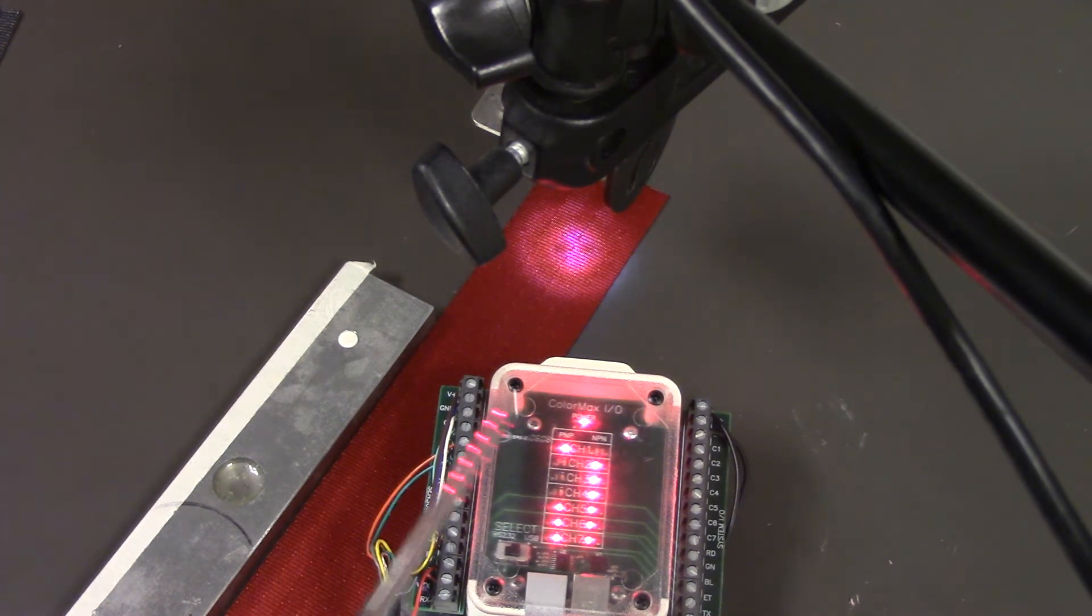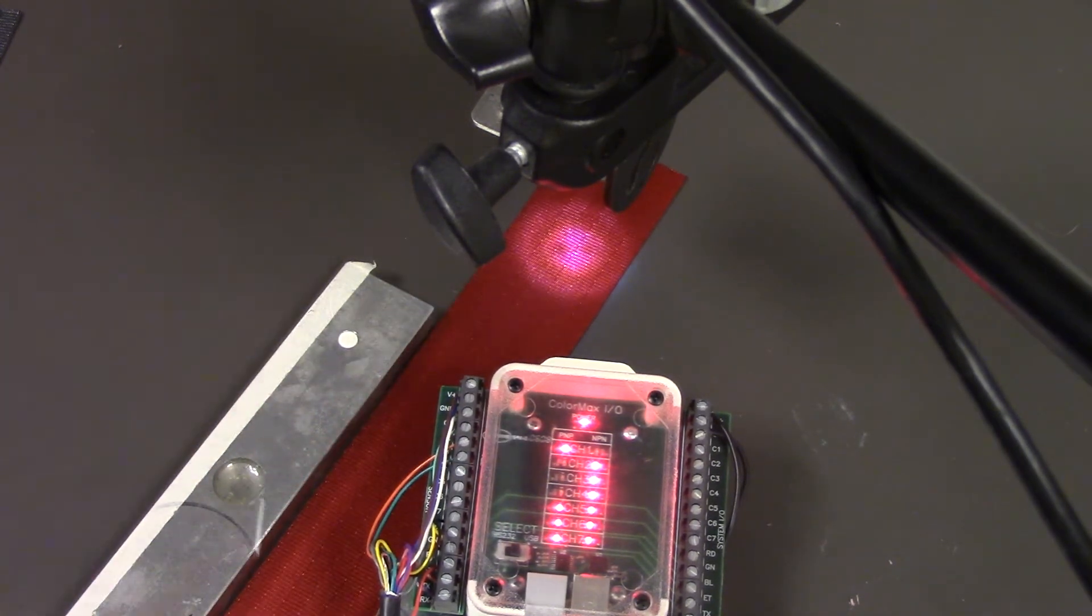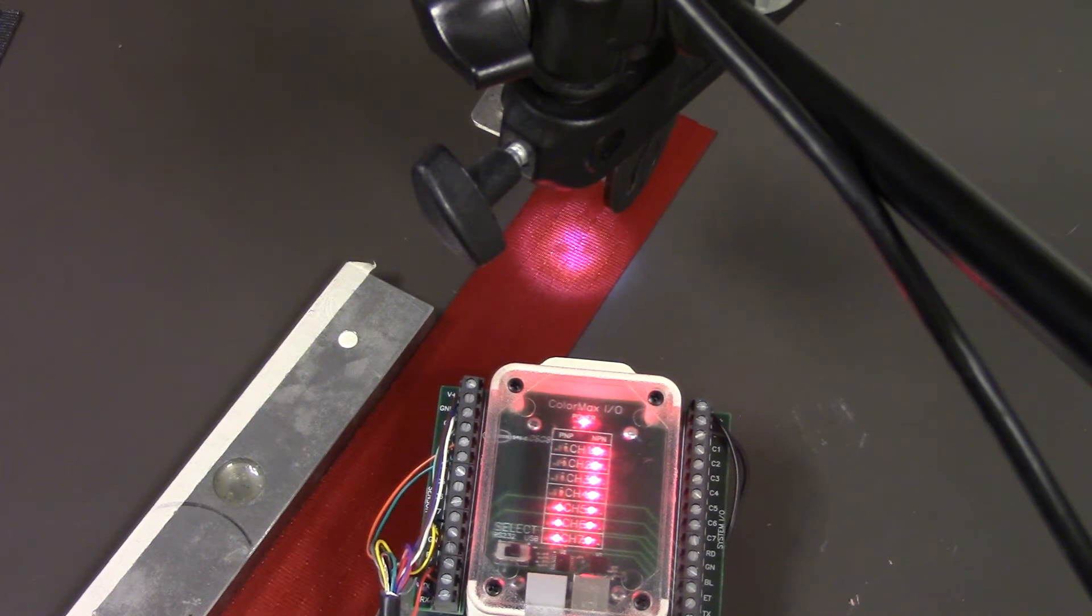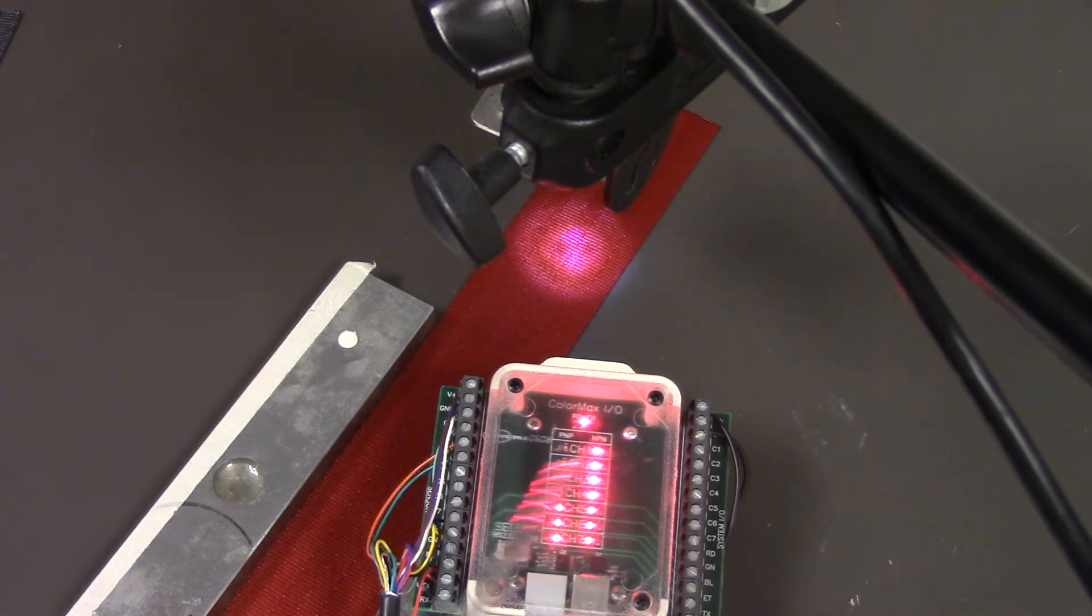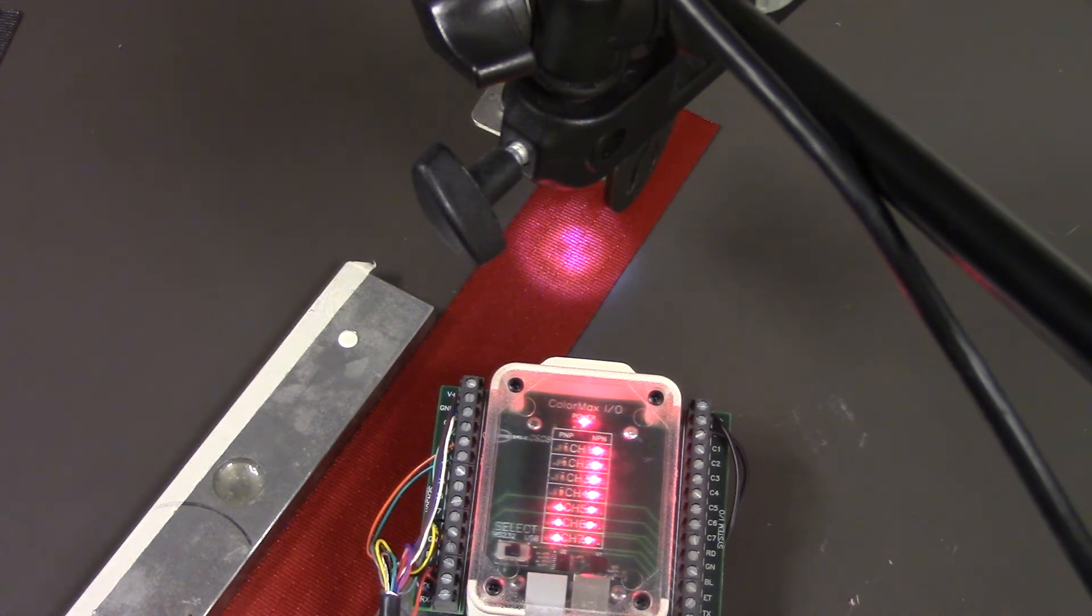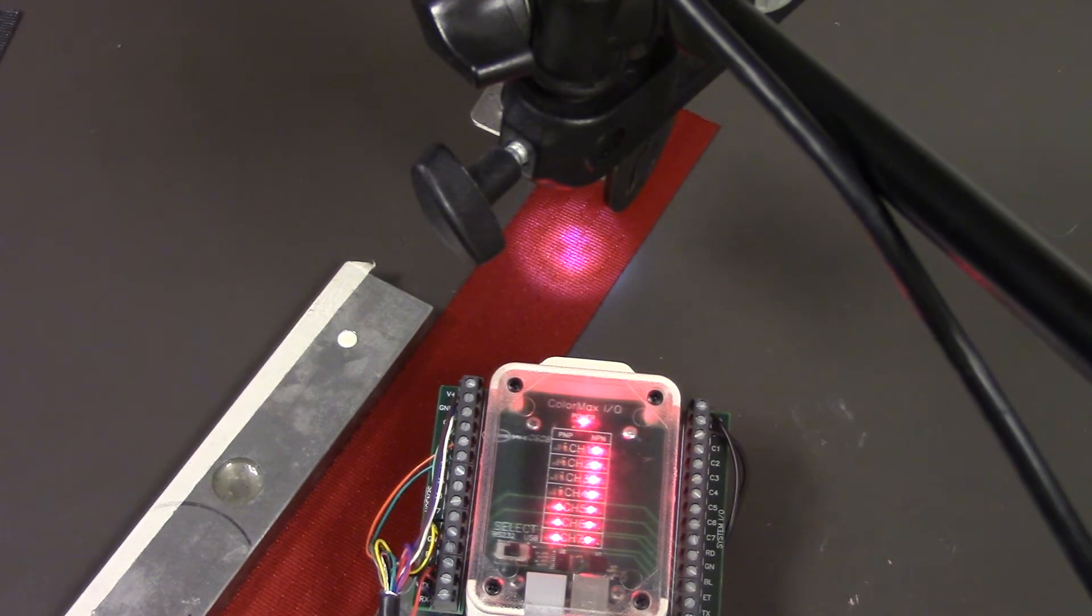For additional seat belt colors, we have a version with a 15 channel output. The 15 channel output is in hexadecimal format, so it uses four wires and provides an output code for up to 15 different colors.